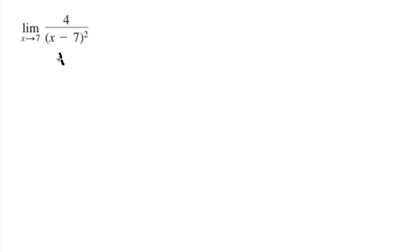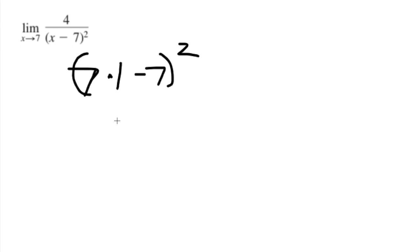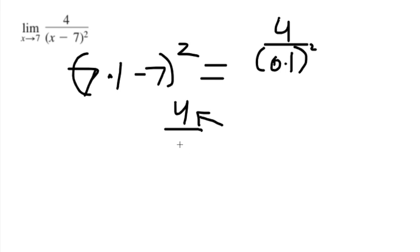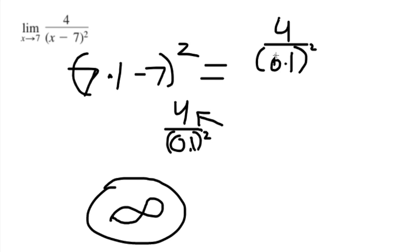Since all four rules fail, we pick a number slightly greater than 7, like 7.1. Plugging in 7.1 minus 7 gives 0.1 on the bottom, and even squaring it still gives a very small number. The numerator is bigger than the denominator, which means the expression is approaching infinity. So our answer is infinity for this problem.